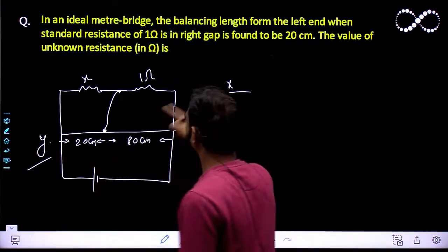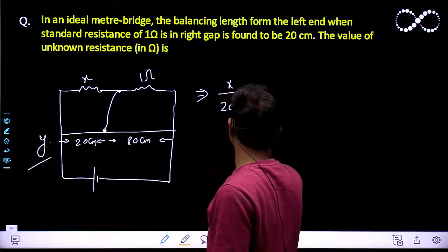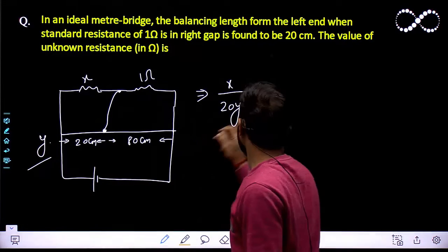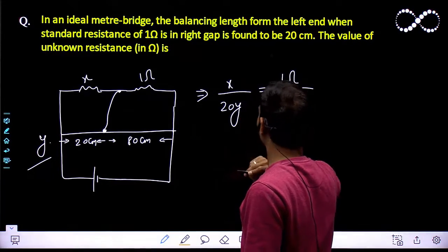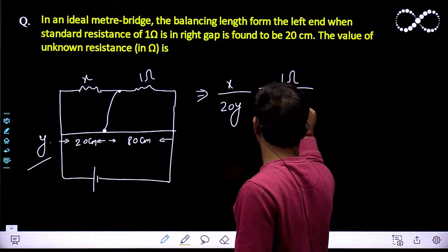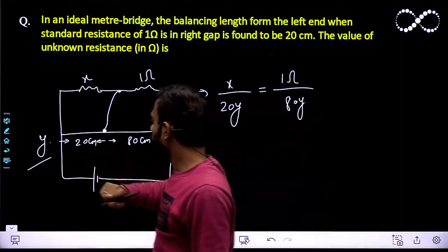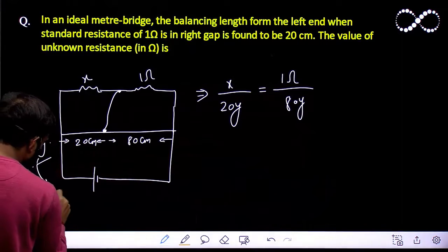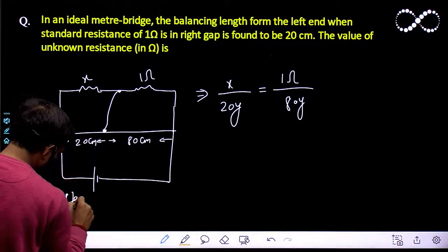So I can say from here, x upon 20y will be equal to 1 ohm upon 80y, right? Y is the resistance per unit length.